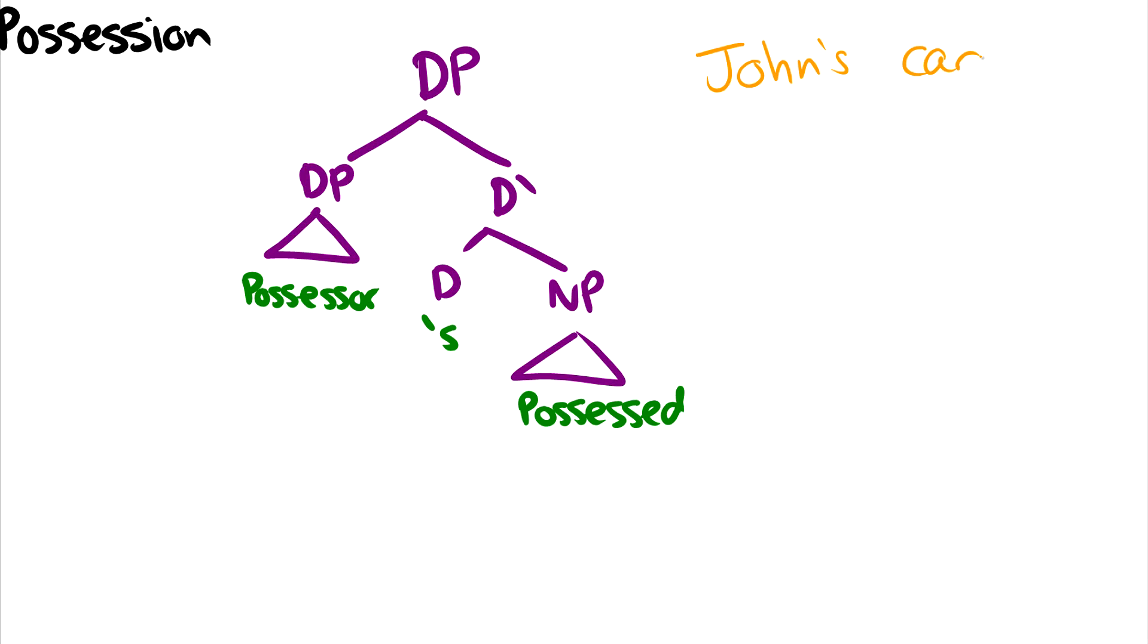Well, now we can do it. So actually, this possessive S is the head of a determiner phrase. And we think of this as the specifier of the DP is the possessor, while the complement of the DP, or the D is the possessed. So John is going to be the specifier of the DP, which is another DP in itself. And the car is the noun phrase that is the complement of the determiner head.